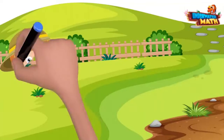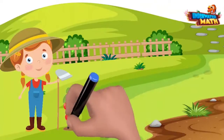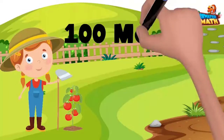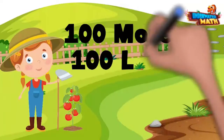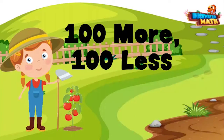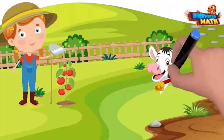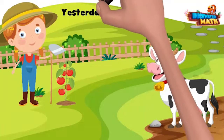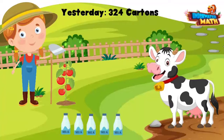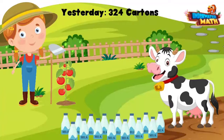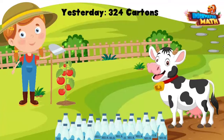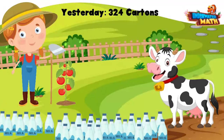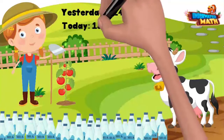Howdy friends, I'm Alice, and today on the farm we have some work to do with 100 more and 100 less. Come along — this here is my cow Betsy. Yesterday she made 324 cartons of milk, and today she made 100 more cartons of milk. We need to determine how many cartons she made.